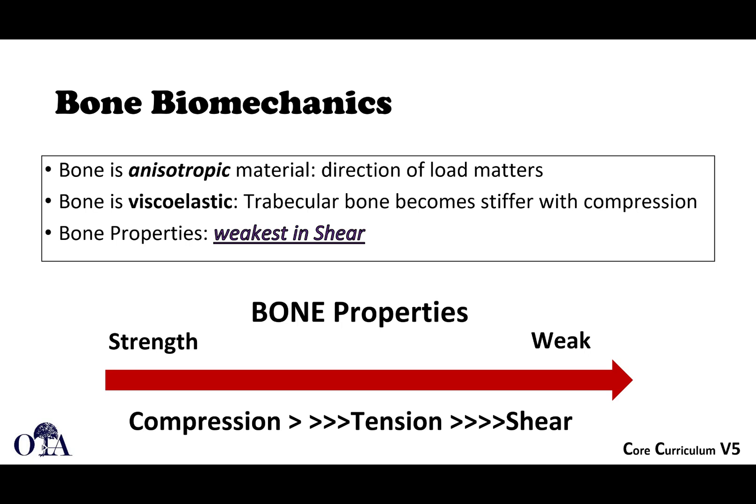We think about the terms we used in the last video and now apply them to bone. Bone is anisotropic, so the direction of the load matters. It's stiffer depending on how you load the bone, and therefore it will fail easier in certain directions.